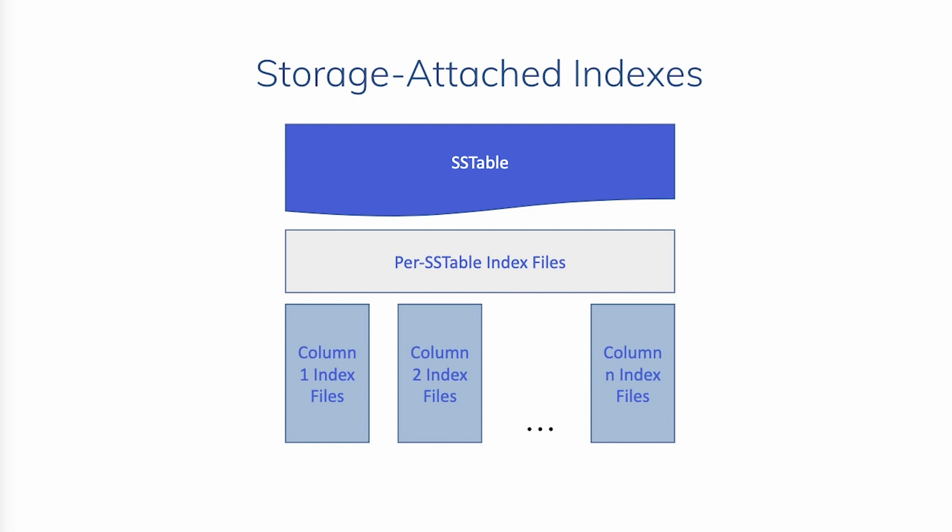So how does this work? SAI creates indexes on both the MEMtable and SSTables, and the indexes live right next to the data. When a write comes in, the new data is indexed in the MEMtable, which then gets flushed to an SSTable and index. There are individual index files stored for each column, and the files contain a pointer to the offset of the actual data in the SSTable.